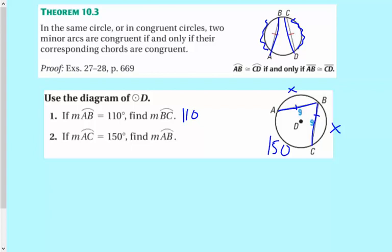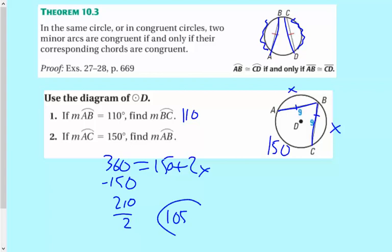Then we can go 360, total sum 360 equals 150 plus 2X and then solve that for X. So subtract the 150 and divide by 2. So 105 will be AB.